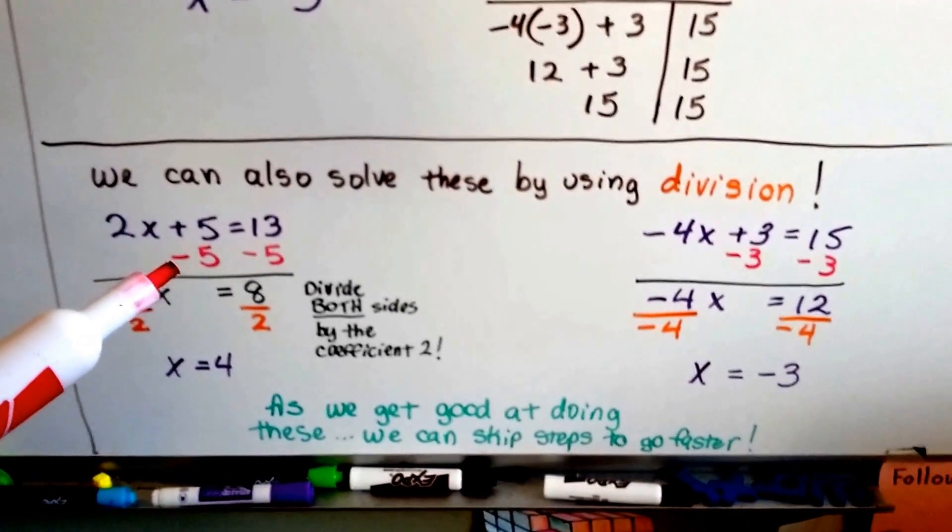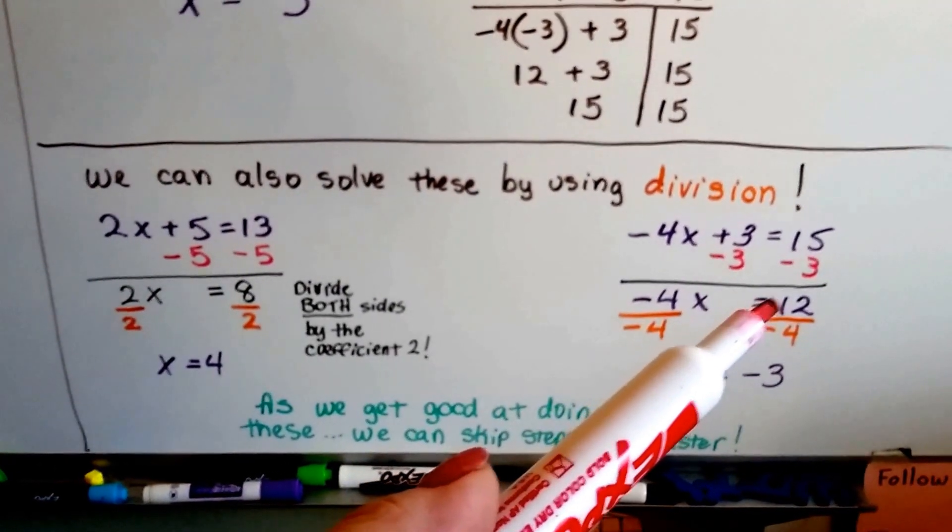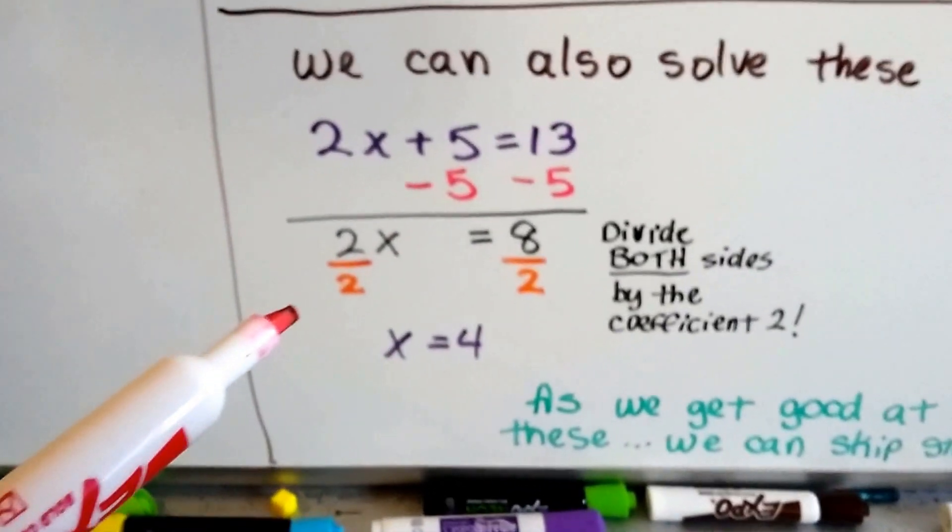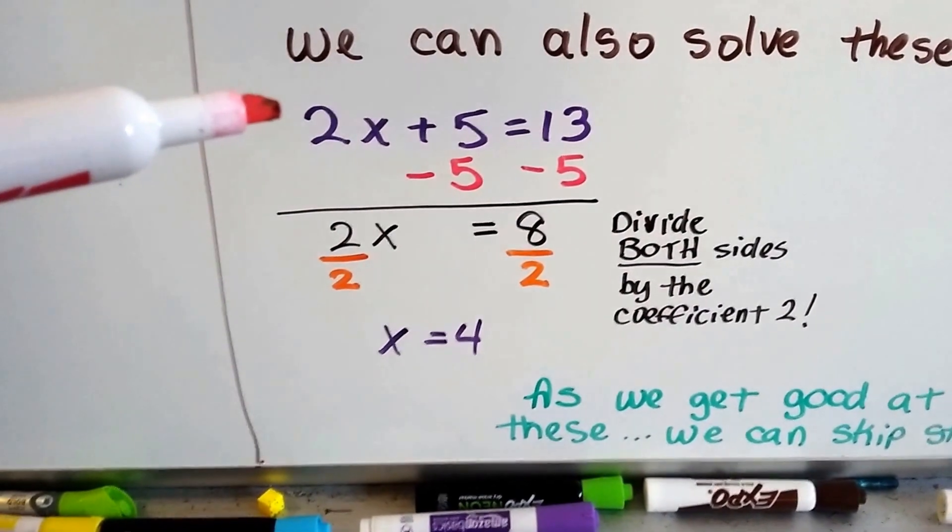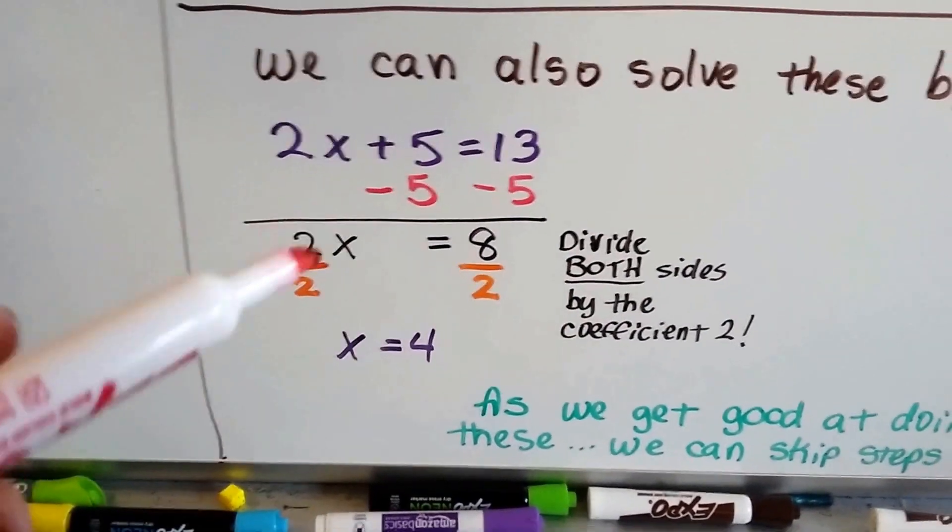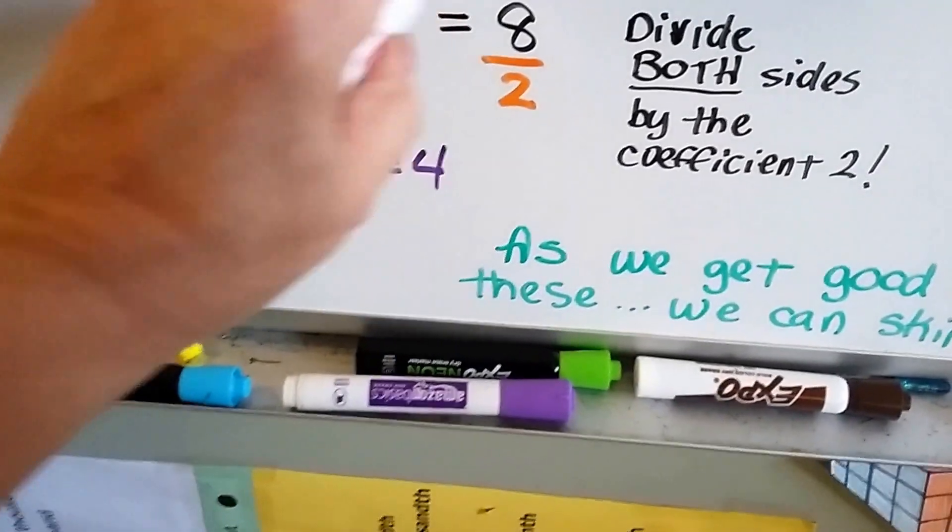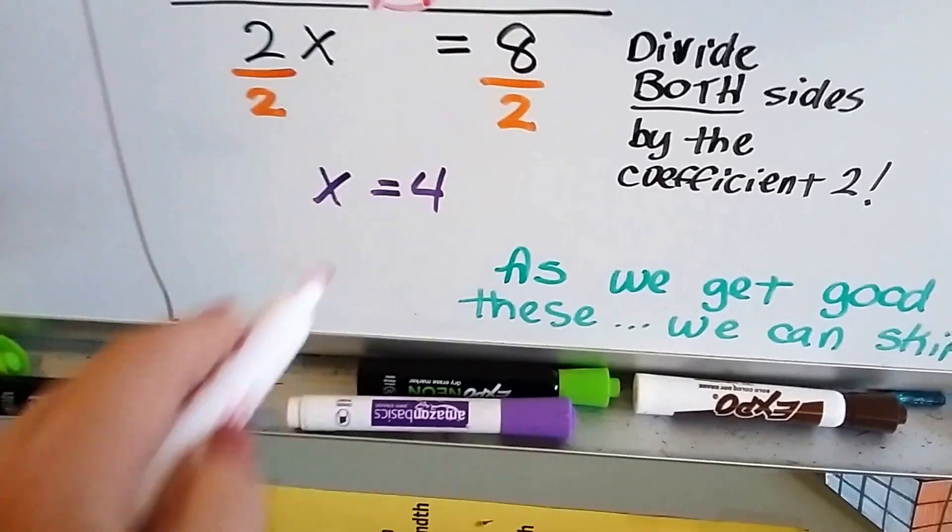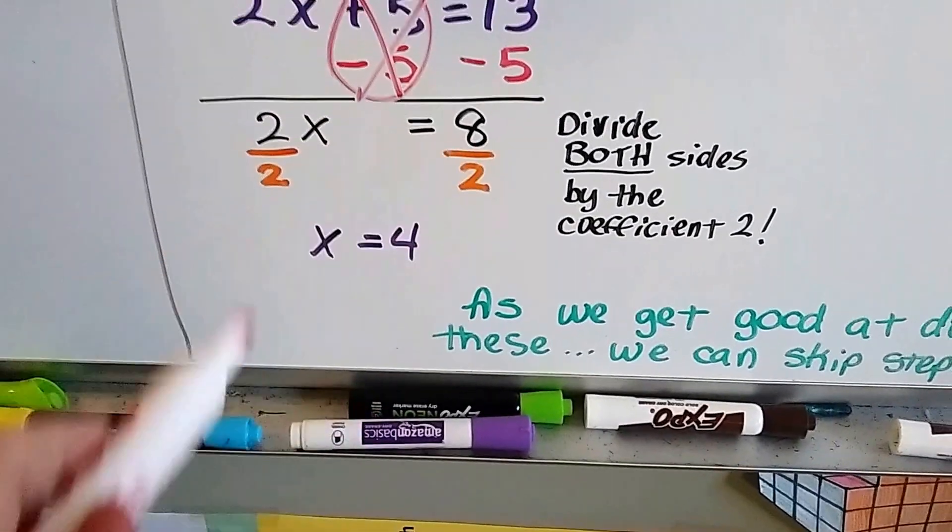So here's the first example we did. And here's that second example we did. All we have to do is have the equation 2x plus 5 equals 13. Subtract the 5 from each side to create a zero pair. So that this is now gone. And we end up with 2x equals 8.